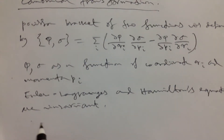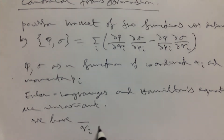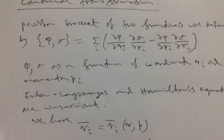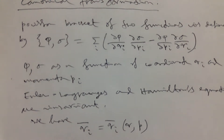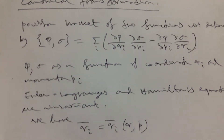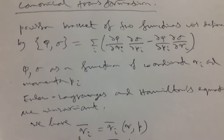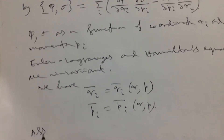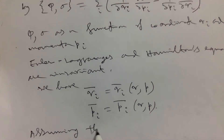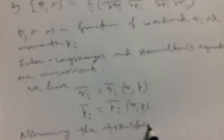Now the simplest way: we have q̄ᵢ, which will be q̄ᵢ of (q,p), and p̄ᵢ is the function p̄ᵢ of (q,p). Assuming the transformation is invertible, we can use the chain rule.